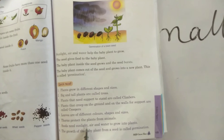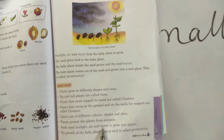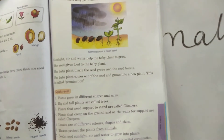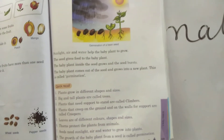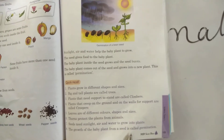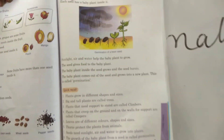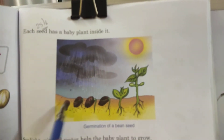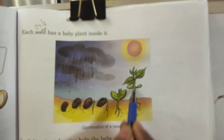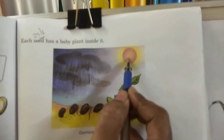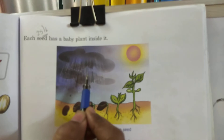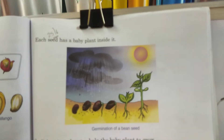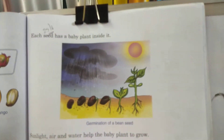A seed needs sunlight, air and water to grow into a plant. The growth of a baby plant from a seed is called germination. If we sow a seed in the land, it will grow into a plant with the help of sunlight, rain and air. Now let's see the questions and answers.